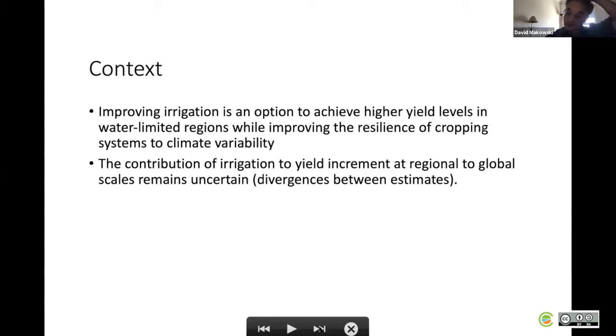A key point is that the contribution of irrigation to yield increment is highly uncertain, both at the regional and global scales. Several estimates were published in the literature, but there are big divergences between these estimates.